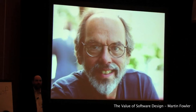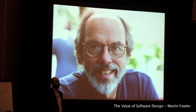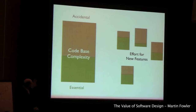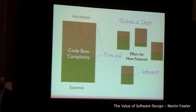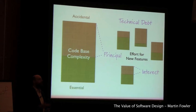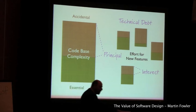Ward Cunningham — the inventor of wikis and therefore the grandfather of Wikipedia, and a very major figure in design thinking in the Smalltalk world and the agile revolution — came up with a metaphor to think about this. He said: the extra complexity in our codebase causing extra effort for new features is like a debt. By taking on extra complexity, we're taking on a debt. When you've taken on a debt, there are two things you can do: you can either keep on paying the interest — the additional cost for every feature — or you can pay down the principal, which means cleaning up the code. That's the trade-off you face.